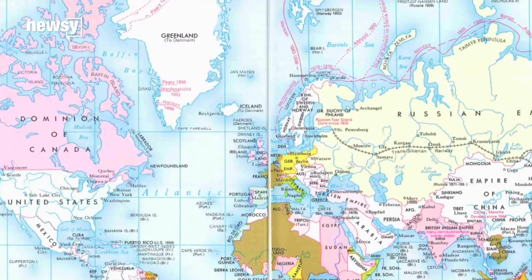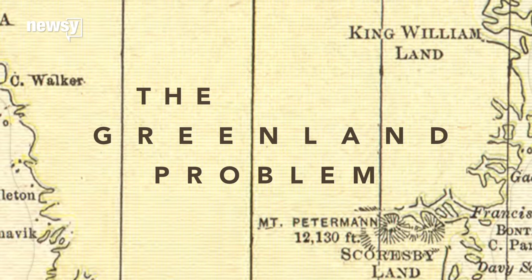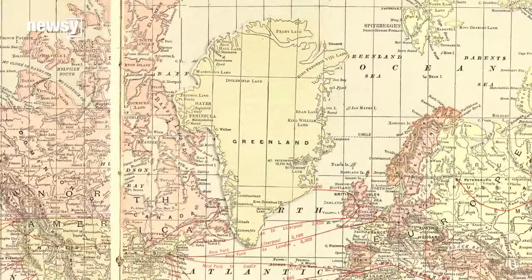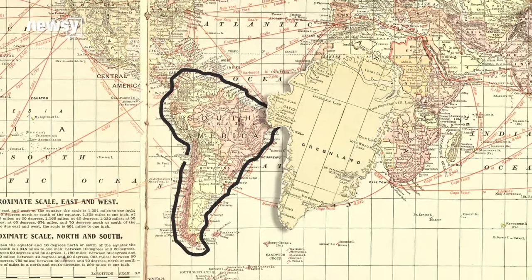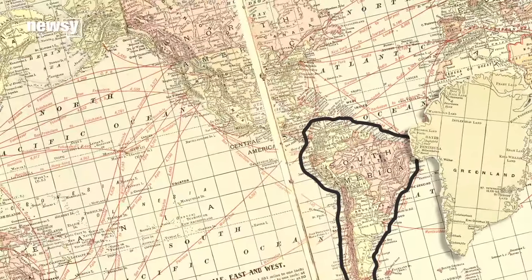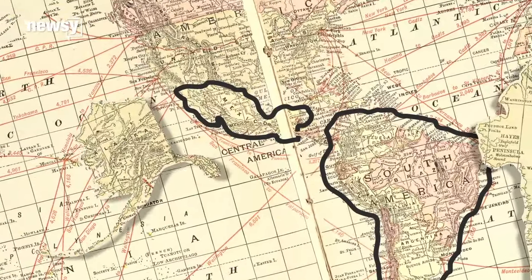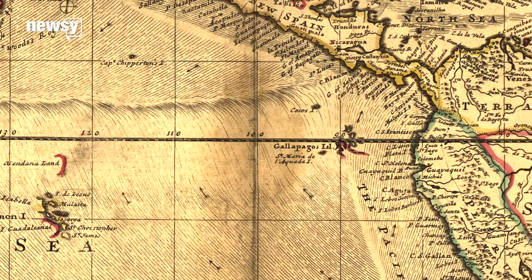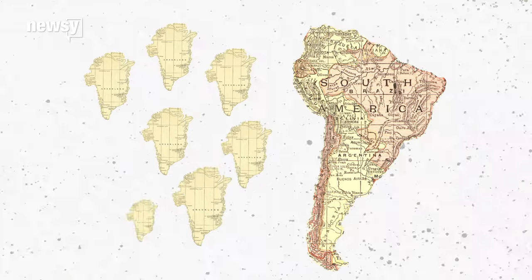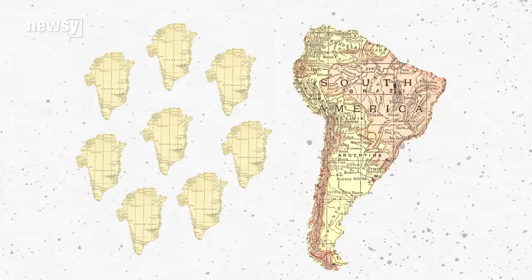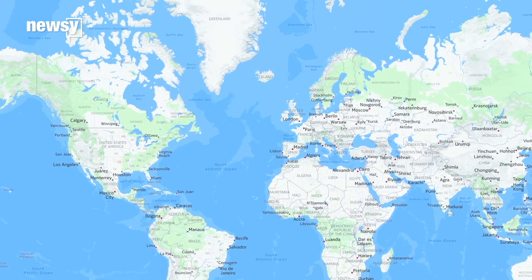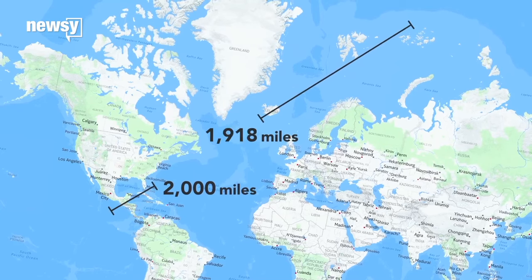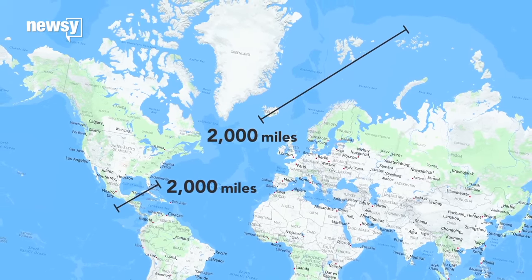This creates what some mapmakers call the Greenland problem. On Mercator's map, Greenland is huge — bigger than the entire continent of South America. The same thing happens with Alaska; the state looks bigger than the entire country of Mexico. The farther land is from the equator on a Mercator map, the more stretched out it looks. In reality, South America is eight times the size of Greenland, and Mexico is actually bigger than Alaska. For the same reason, 2,000 miles looks very different depending on where you are on the map — but it's the same distance. The fault is in the map.